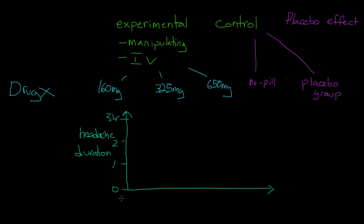And then we'll put our different experimental groups and our control groups on the x-axis. Here I'll have the no pill control group, and here I'll have our placebo control group. And then over here we'll have our 160 milligram group - that's an experimental group. Here we'll have our 325 milligram group, also an experimental group. And then lastly, we'll have our 650 milligram group.